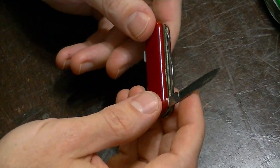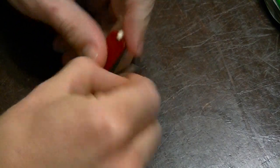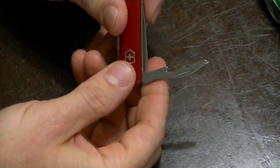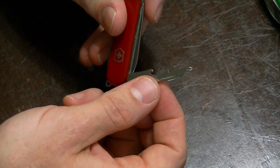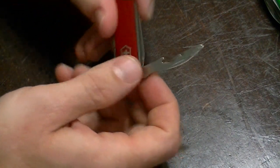You've just got a small knife blade, Victorinox's excellent combo tool. That Phillips tip works on number ones and twos. Bottle opener, wire stripper here.